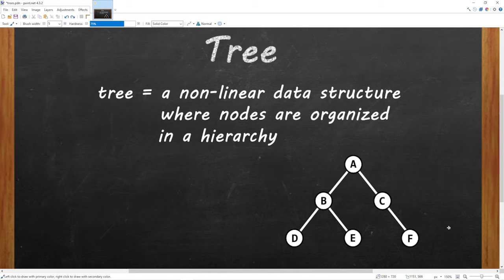This could be one example of a tree. It's made up of nodes and edges. Nodes could be some piece of data, and edges represent a relationship between two nodes.